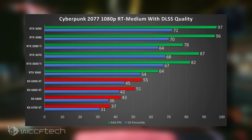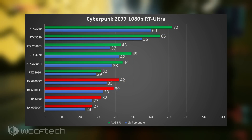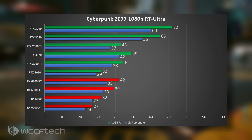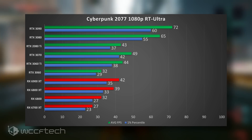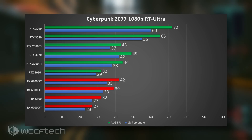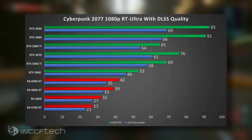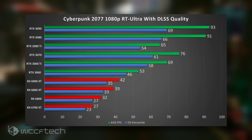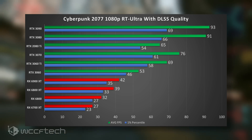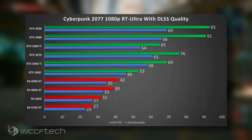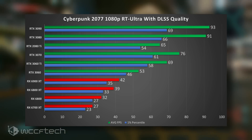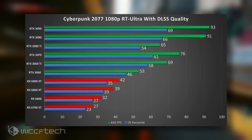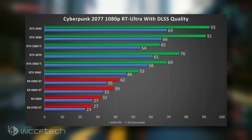Moving to ray tracing ultra — where reflections, shadows, and lighting all go to ultra — the 6900 XT drops to 42 FPS. The small decline on the 3080 and 3090 reflects CPU overhead since DLSS is running at a lower internal resolution, then AI-upscaling and reconstructing the image to nearly native quality. It's not identical to native, but in actual gameplay it's very hard to discern — you'd have to pixel-peep to notice a difference. With everything on and DLSS at quality, the 2080 Ti is able to break the 60 FPS barrier.